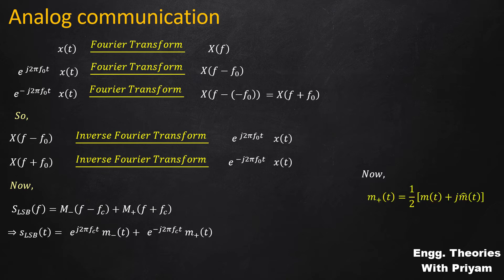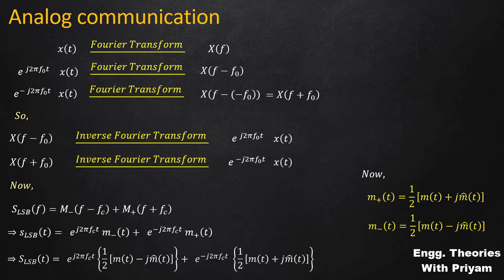Now M+(t) has the value of half times [m(t) + j·m̂(t)], and M-(t) has the value of half times [m(t) - j·m̂(t)]. Substituting these values, the lower sideband SSBSC modulated signal in the time domain equals e^(j2πFct)·(1/2)[m(t) - j·m̂(t)] + e^(-j2πFct)·(1/2)[m(t) + j·m̂(t)].